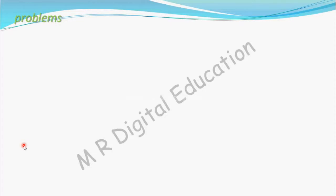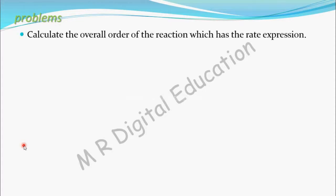Let's see some problems on order of reaction. Calculate the overall order of the reaction which has the rate expression as A: Rate equal to K into concentration of A to the power 1 by 2 into concentration of B to the power 3 by 2.